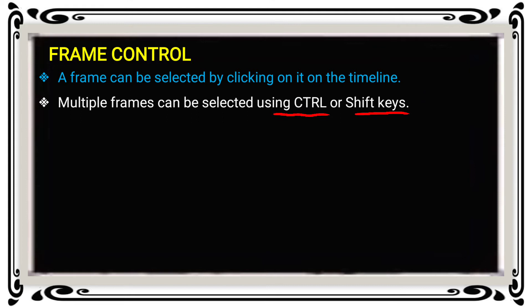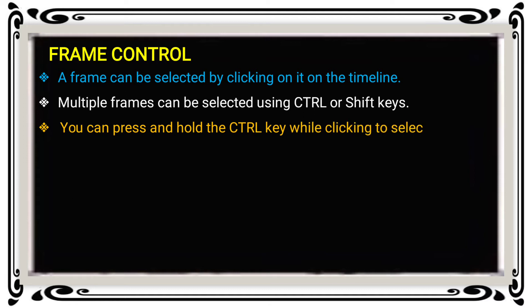After selecting the frames, you can change options in the frame control. You can press and hold the Ctrl key while clicking to select non-adjacent frames on the timeline — that means frames selected without continuity. This method of frame selection is called non-adjacent.